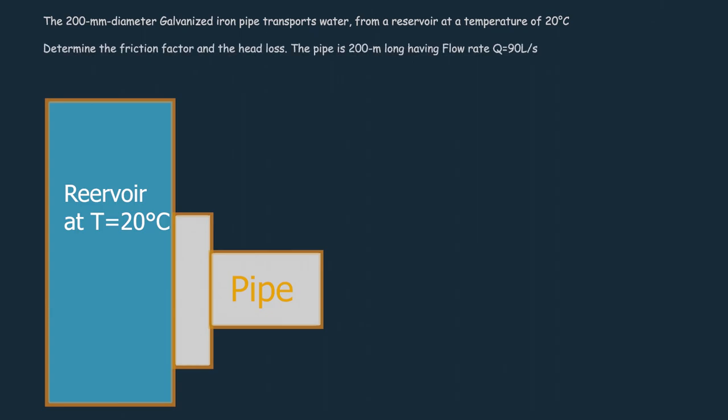Determine the friction factor and the head loss of the pipe. If the pipe is 200 meter long, having flow rate 90 liter per second.